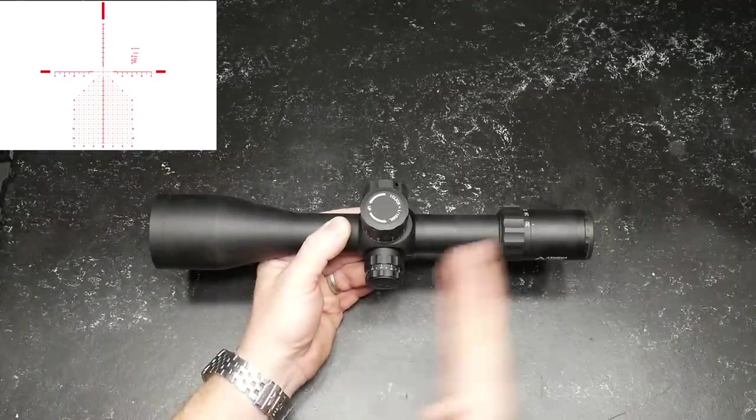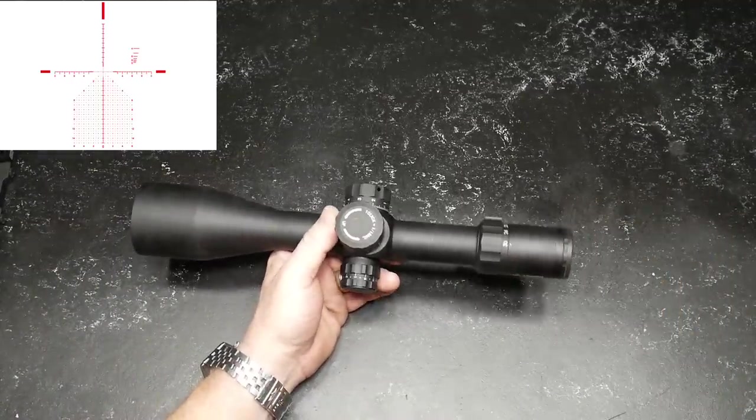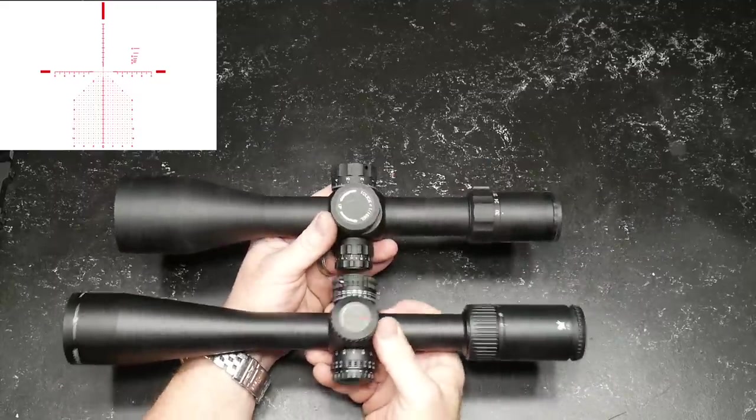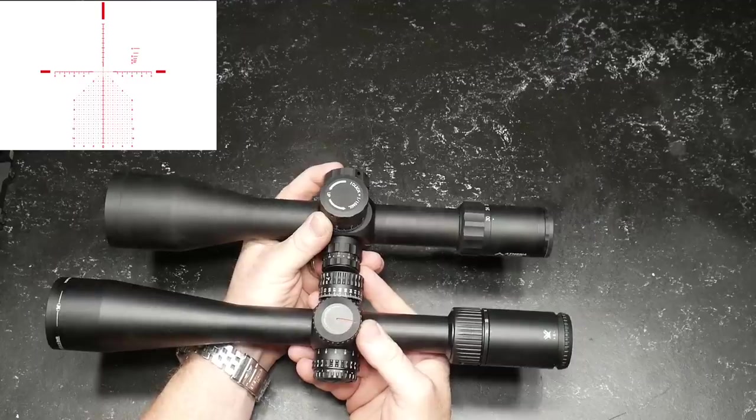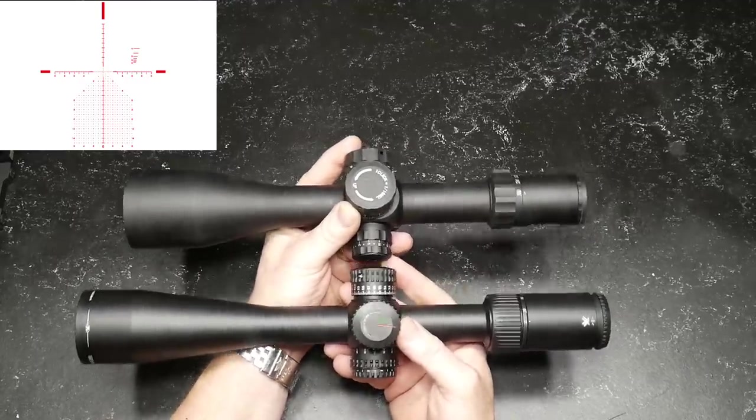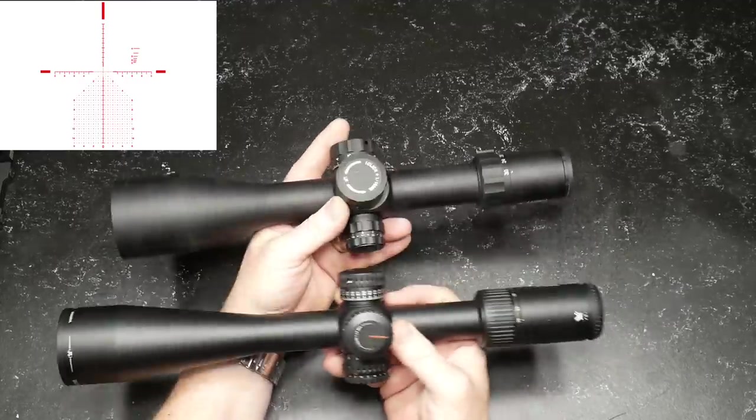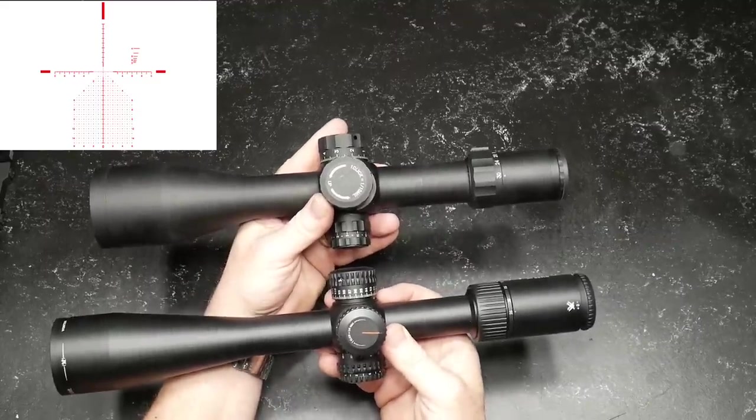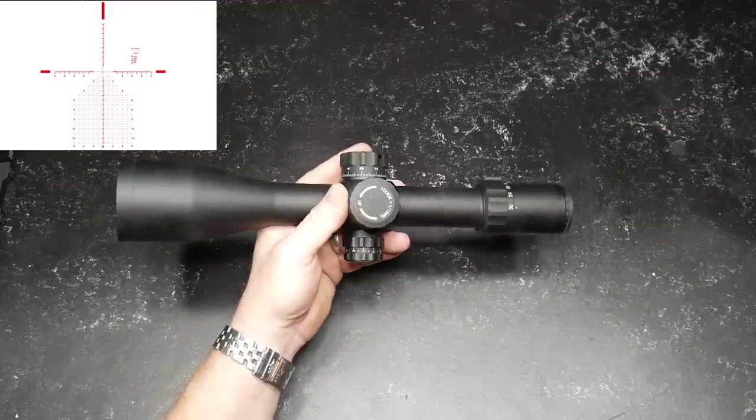There it is in all its glory, and it is a beastie. It is robust. That's what you want in a good high production scope. Let's do a size comparison. This is the Vortex 5 to 25. The PST is no slouch, but as you can see, this guy is a lot bigger and gives you more power than the Vortex has.